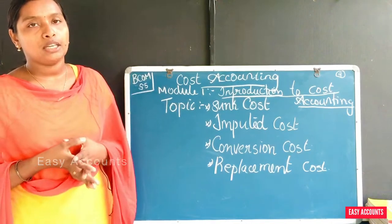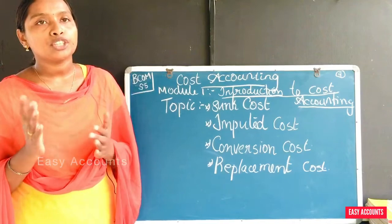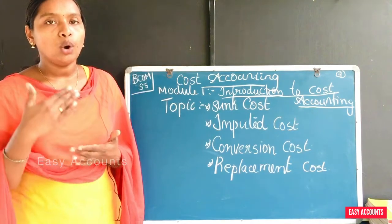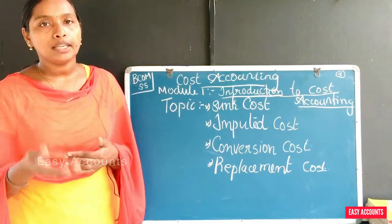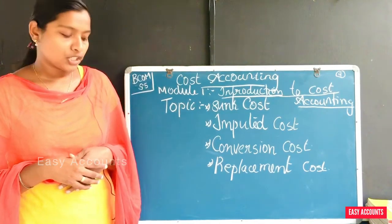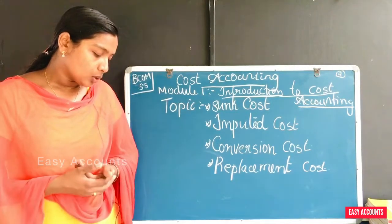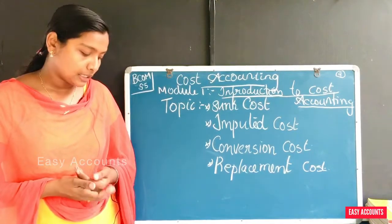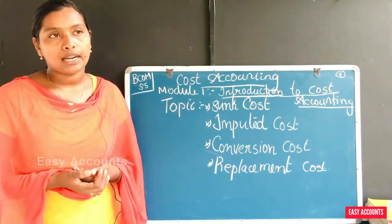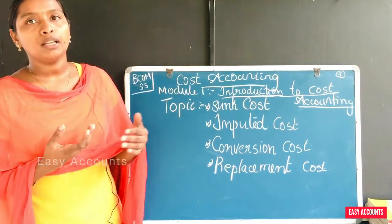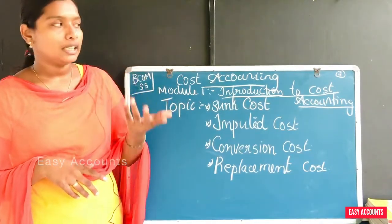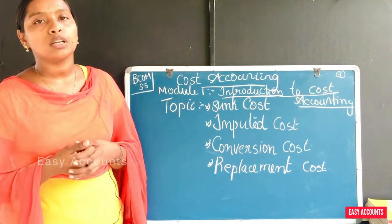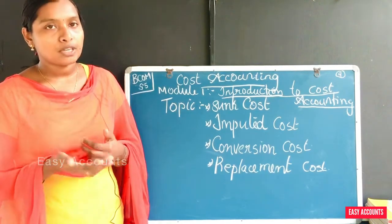Whether you have work-in-progress, semi-finished products, or finished products at any stage, the cost of converting those materials is the conversion cost. Conversion cost includes direct wages and direct expenses such as factory overheads incurred in converting raw materials into finished products.